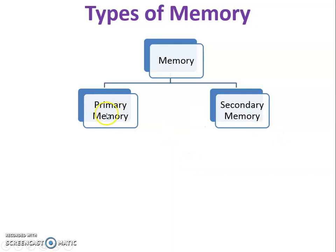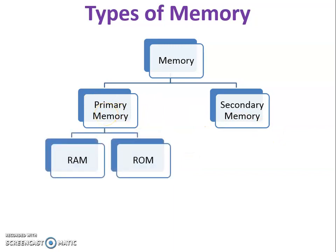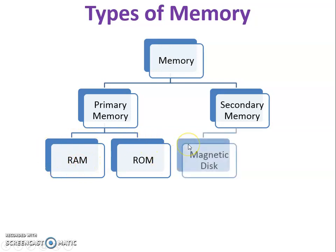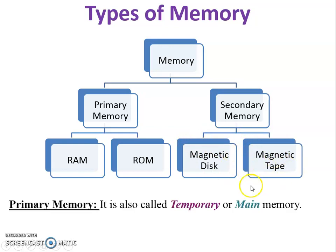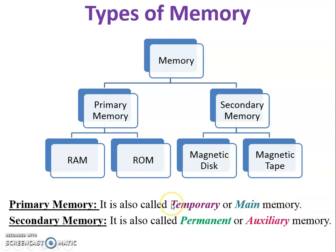There are two types of memories: primary memory and secondary memory. Primary memory, like RAM and ROM, is temporary memory — it is volatile memory. Secondary memory, like magnetic disk and magnetic tape, is non-volatile memory. Primary memory is also called temporary or main memory.